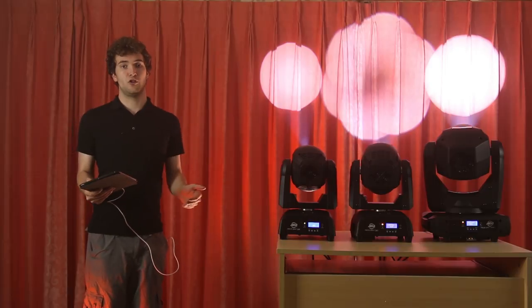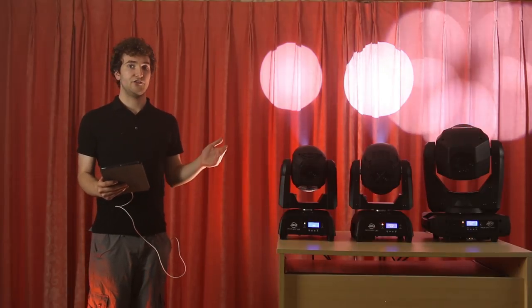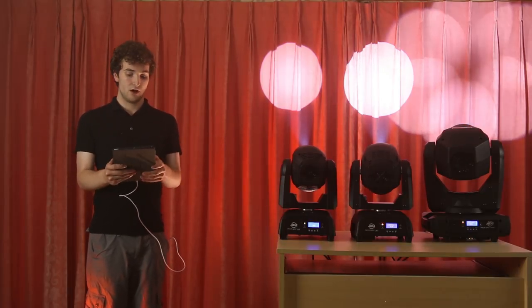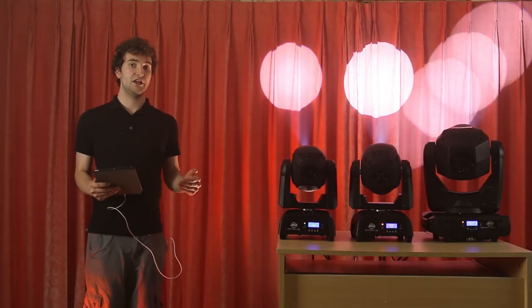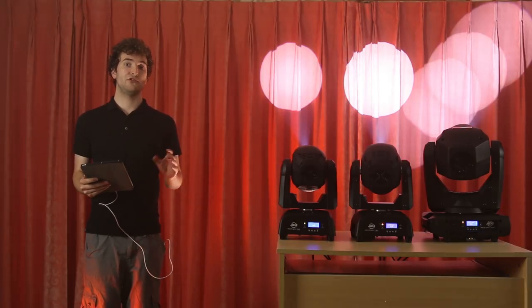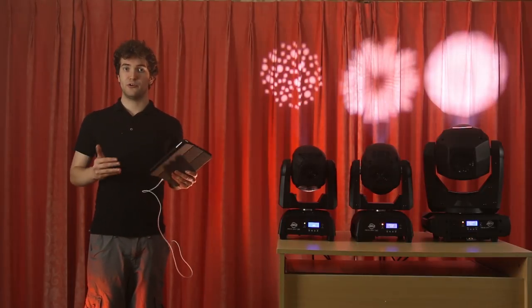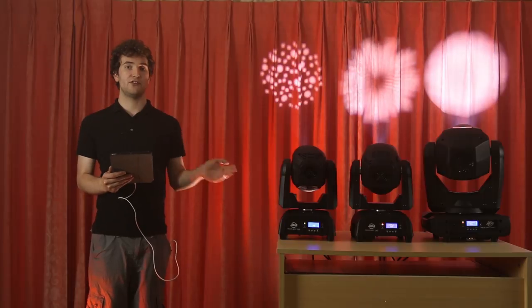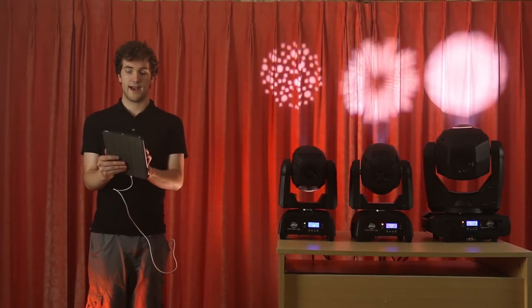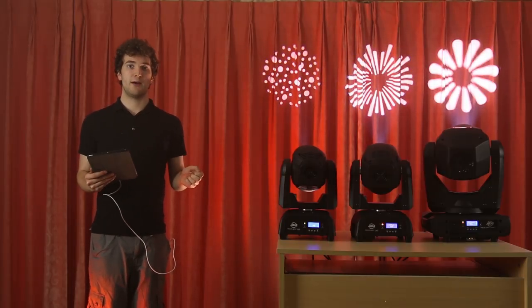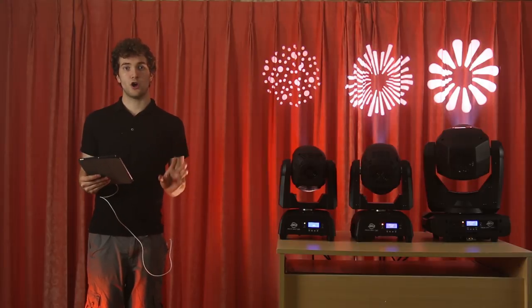The FocusBot 3 has all of the bells and whistles. So we have a six-facet circular prism along with a six-facet linear prism. However, they're both on the same wheel inside the fixture, so you can't use them at the same time. Now, being part of the FocusBot series means that all of these lights have motorised focus. So I can go ahead and remotely sharpen up that focus to focus in on our gobo wheel here.